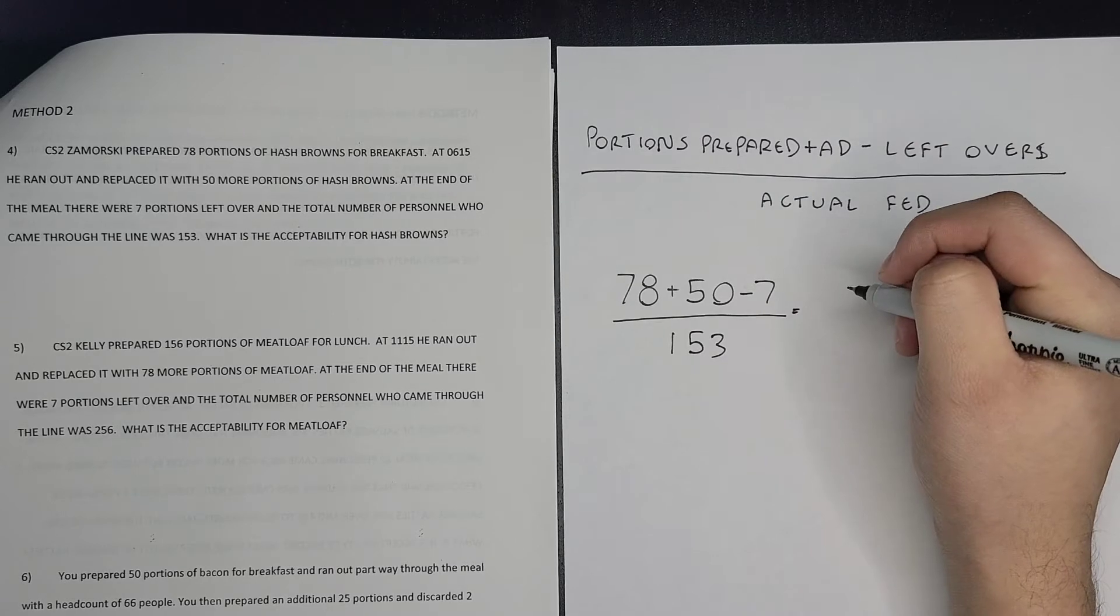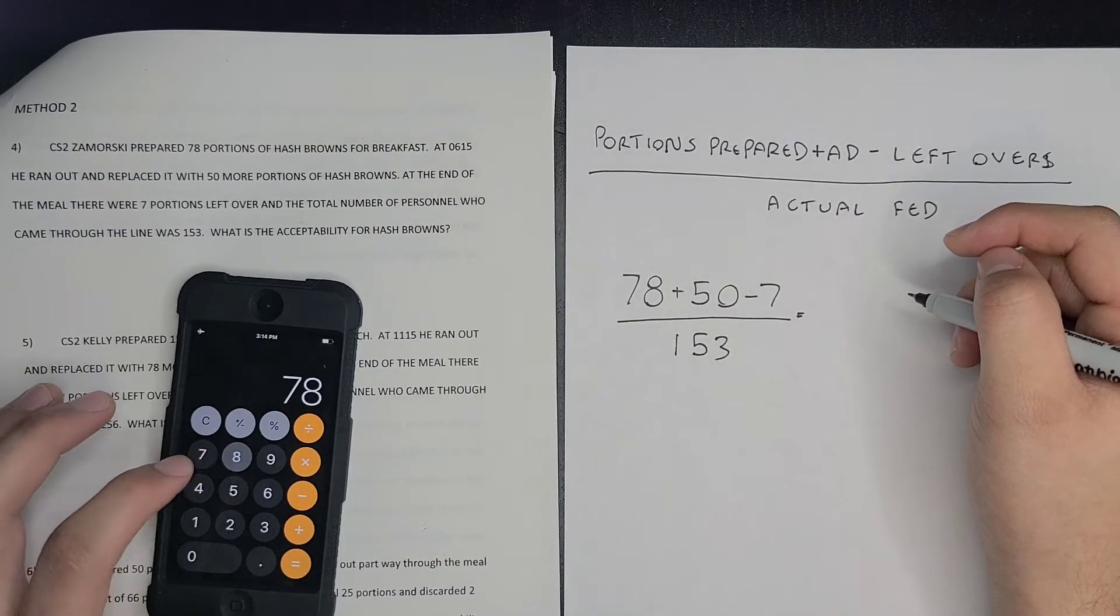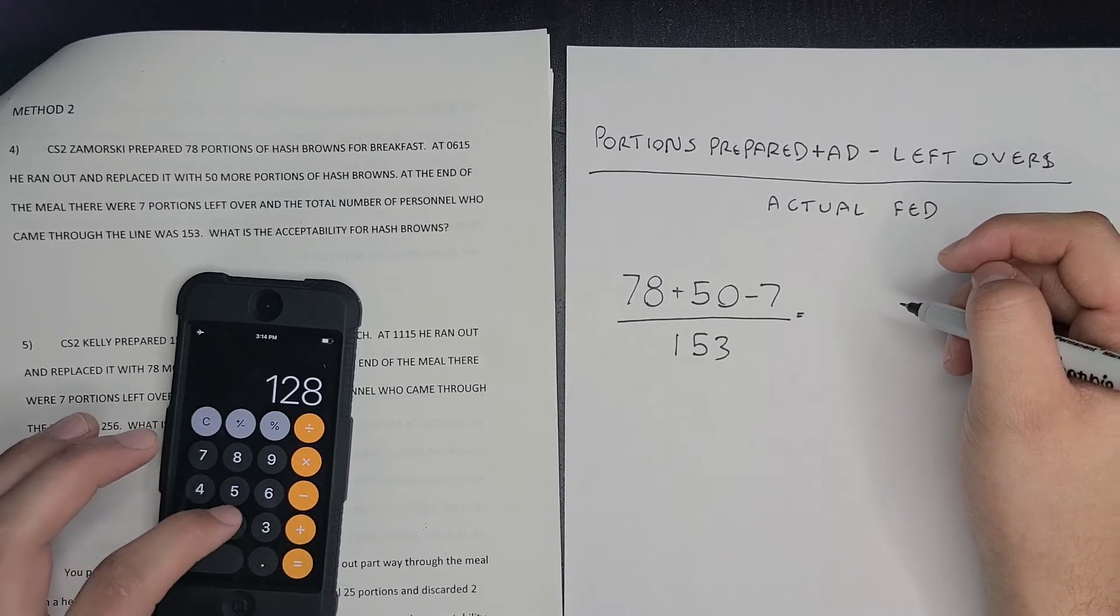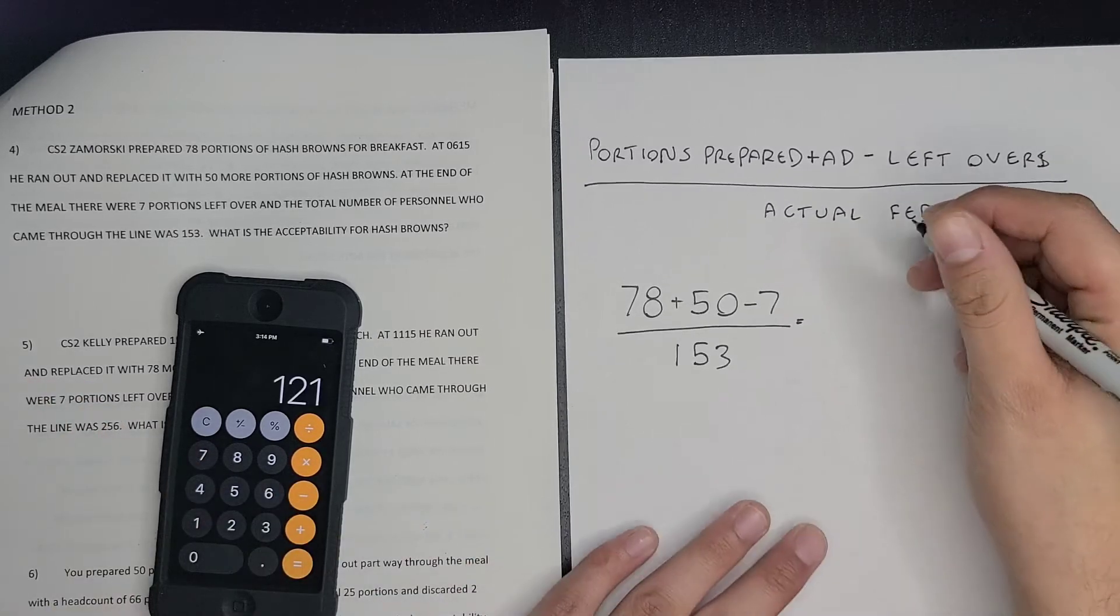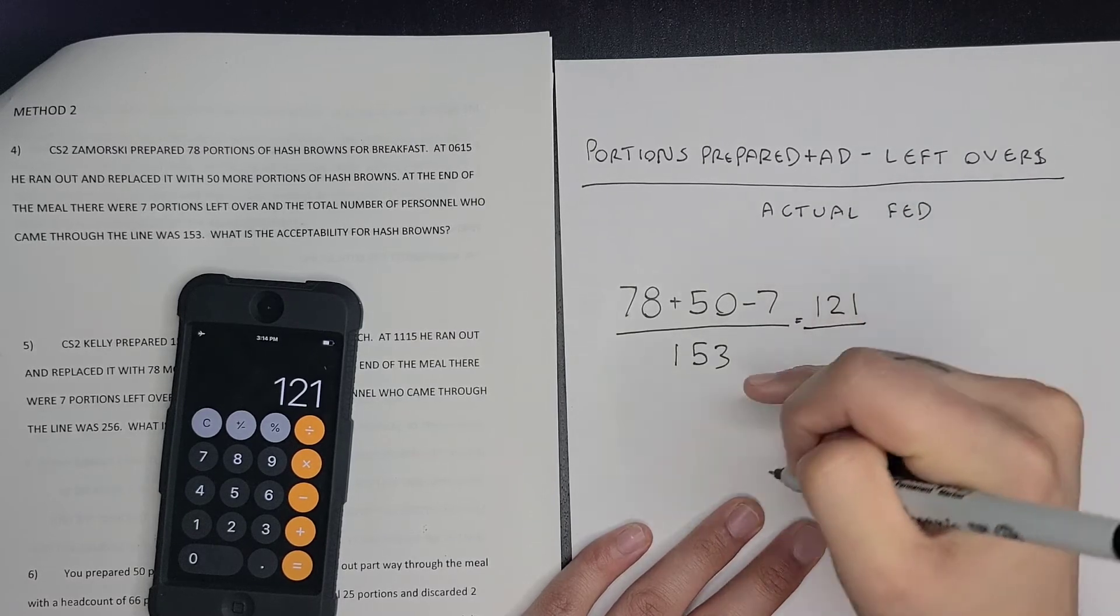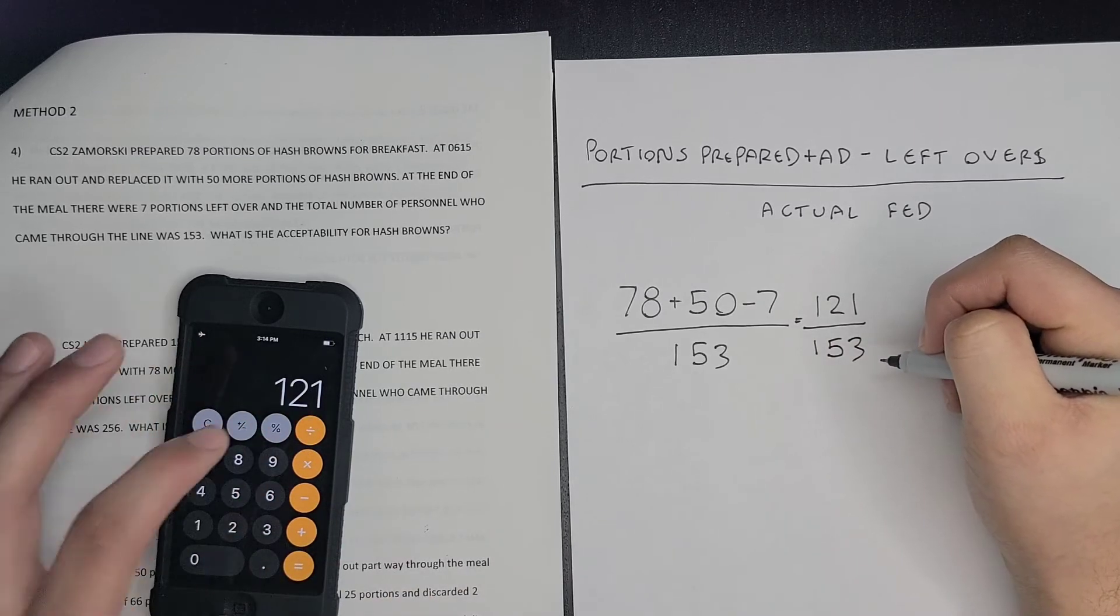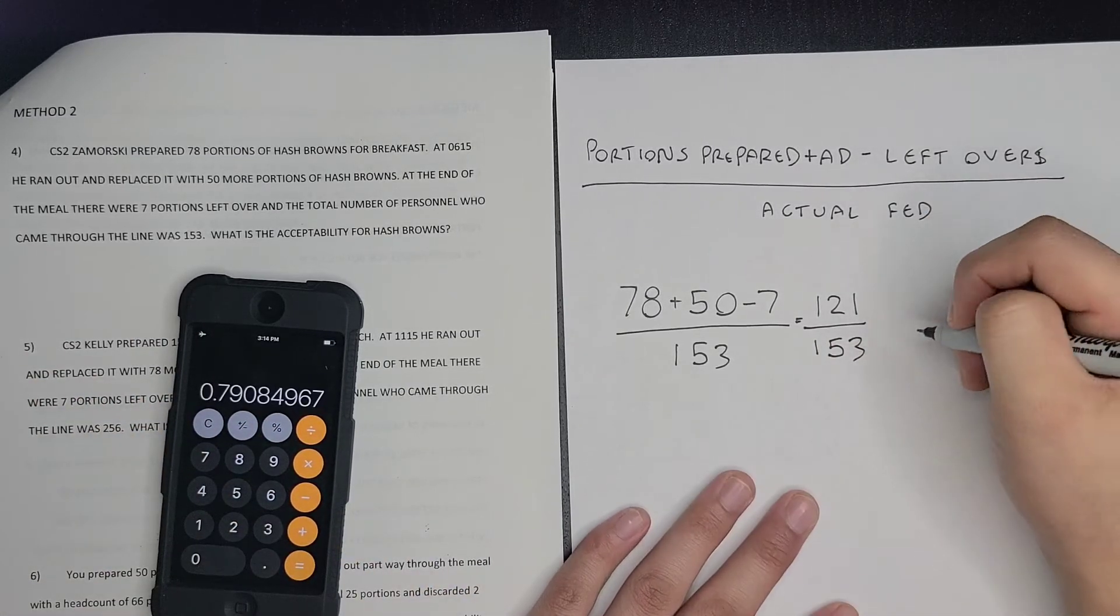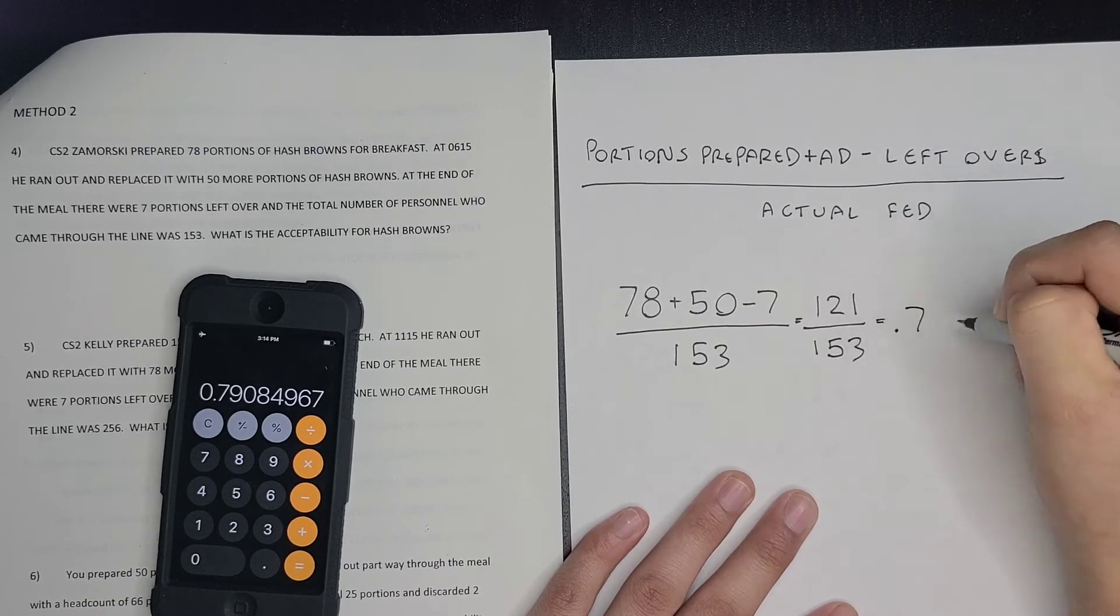So first you're going to do these top numbers. So 78 plus 50 minus seven, which equals 121. And then you're going to divide that by your head count, which is 153.